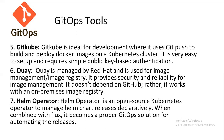The Helm Operator is an open-source Kubernetes operator used to manage Helm chart releases declaratively. When combined with Flux, it becomes a proper GitOps solution for automating releases.